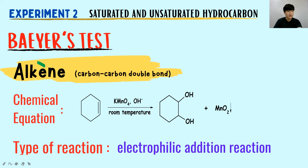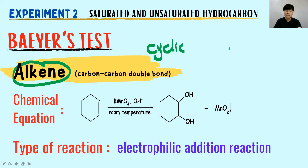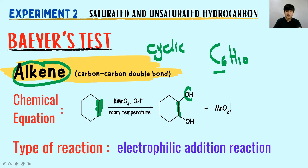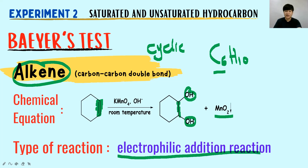Don't forget that alkene can also be in cyclic form — for example, a 6-carbon cyclic alkene C₆H₁₀. You still have 6 carbons, but now in cyclic form. The changes still happen at the carbon-carbon double bond, becoming a carbon-carbon single bond, with OH added to the carbons that held the double bond, still producing the brown precipitate. The entire chemical equation is similar because the process happens at the carbon-carbon double bond, and the type of reaction is still electrophilic addition.